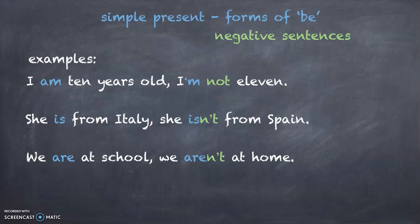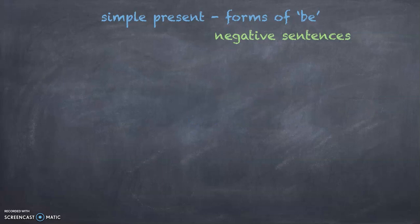Again, you had 'are not', and in the short form you use 'aren't', so you have the N apostrophe T. This is the short form. So let's sum it up: simple present negative forms.